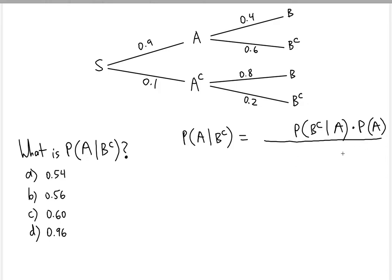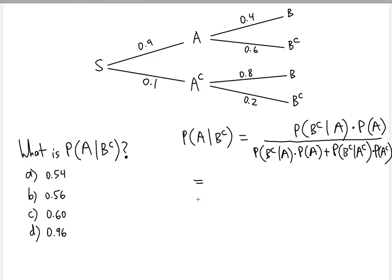So the denominator will consist of two possibilities. The first term you can copy down from the numerator, and also the second possibility — the second path of getting to B complement from A complement. The first term covers going to A then B complement; the second term takes the A complement path, giving P(B complement | A complement) times P(A complement).